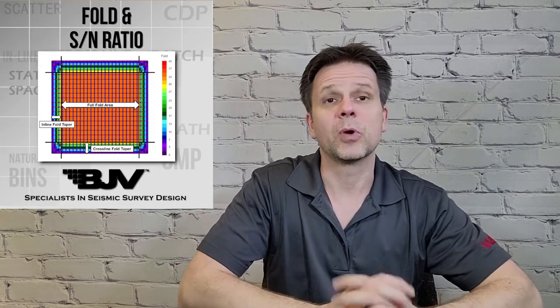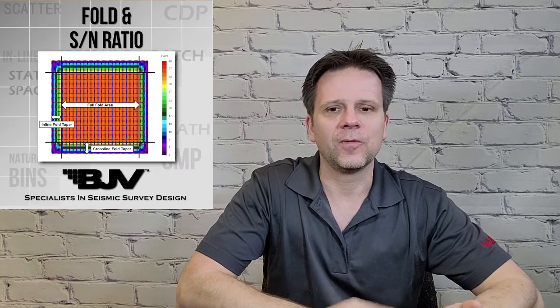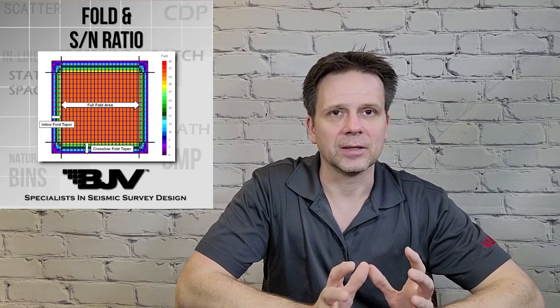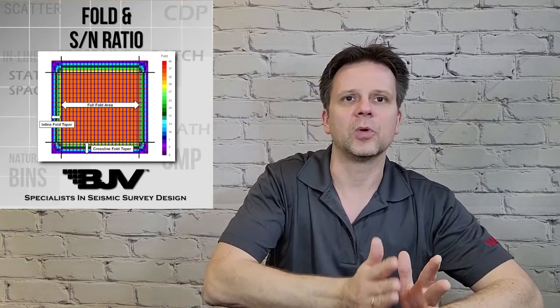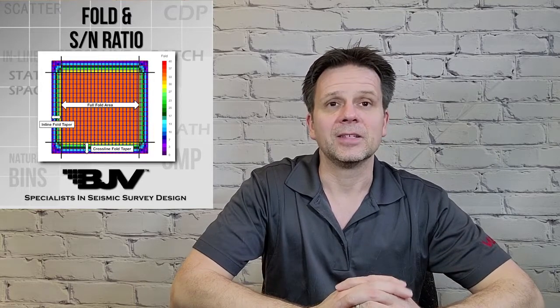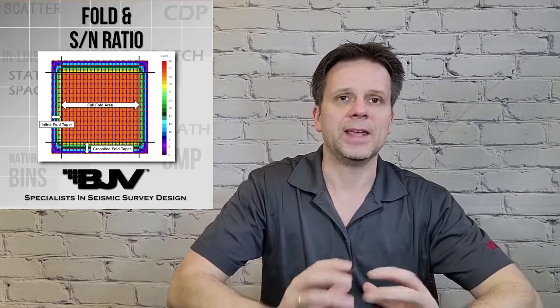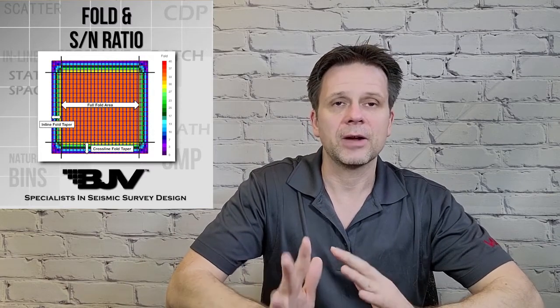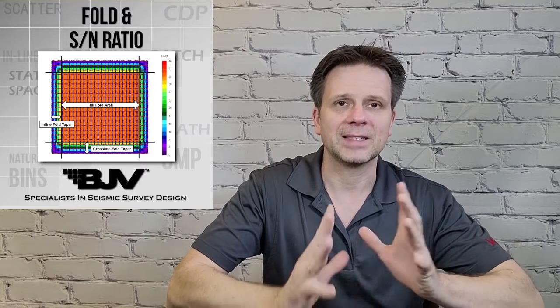Lastly, I want to touch on full fold area versus full taper. The red area is our full fold area — that's where we have full coverage and full offset statistics for that particular location. On the outside is an area where we're building fold, and that's called the full taper. If you're going to acquire seismic and want a certain area imaged, you'll have to acquire a slightly larger area to properly image your primary area of interest. We're not including migration aperture here — that's a topic for another day — but the basic fundamental point is that we need to acquire a larger area than what you want to image.